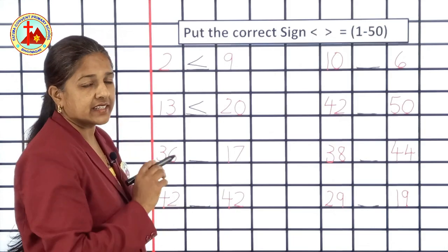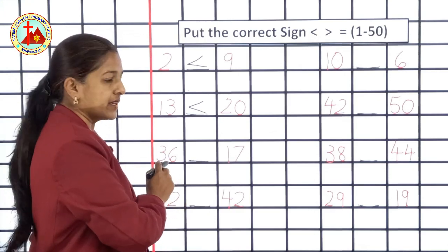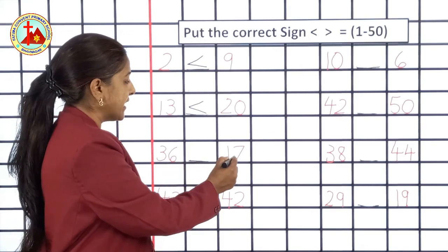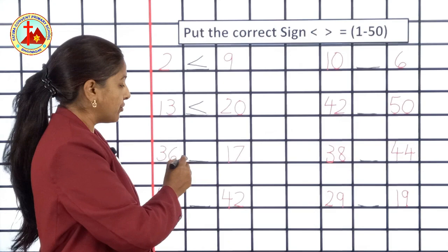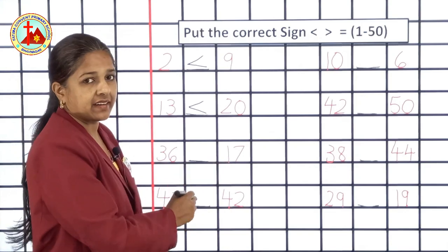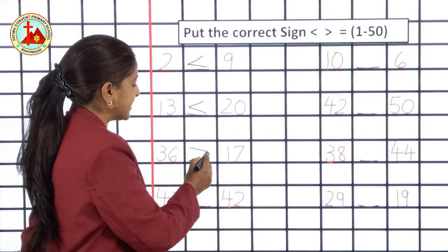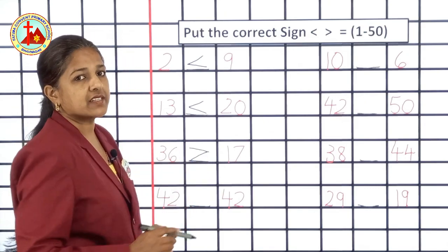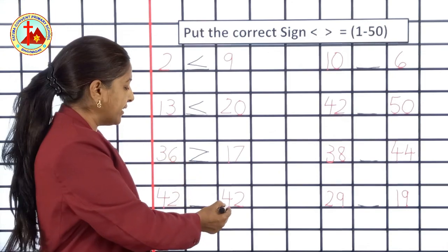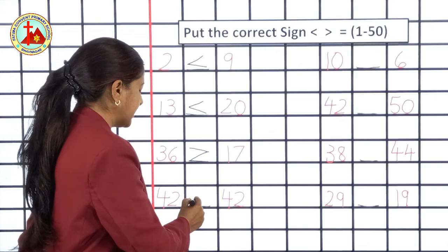Next number is 36 and 17. From these two numbers, 36 is greater than 17. 36 is the greater number, so here greater than sign — mouth is open towards the greater number. Next, numbers are 42 and 42. Both the sides numbers are equal, so equal to sign.